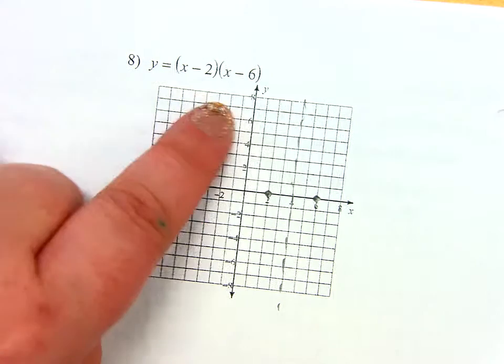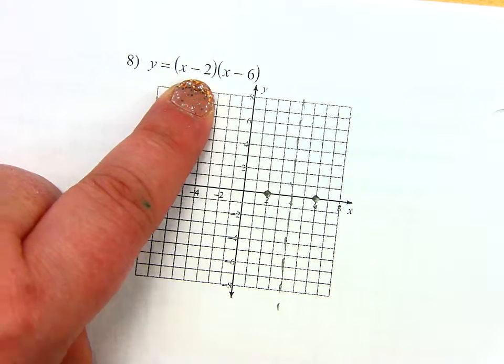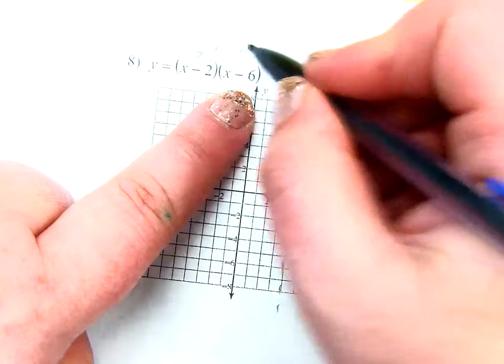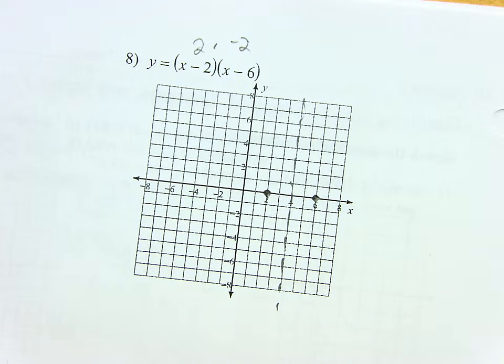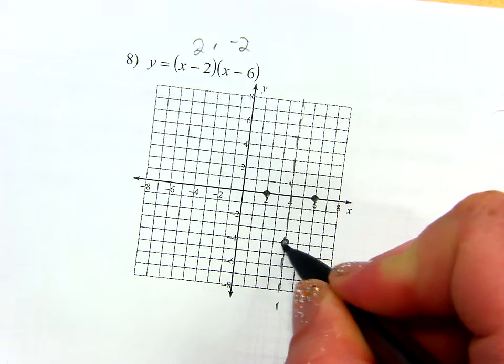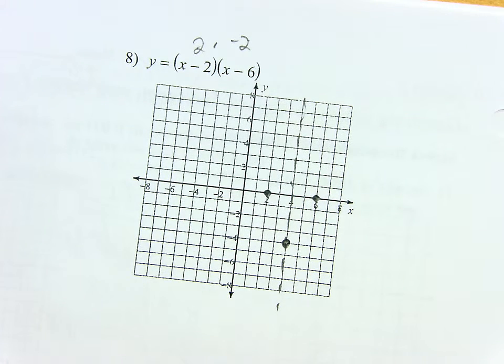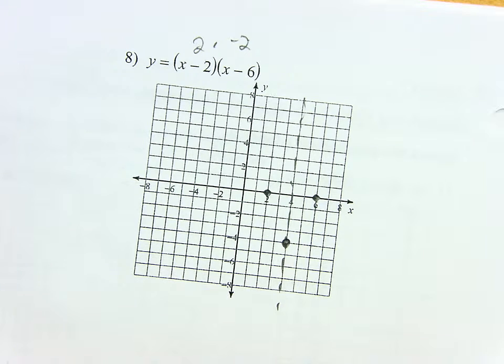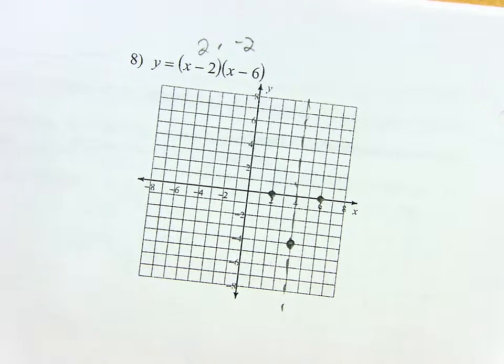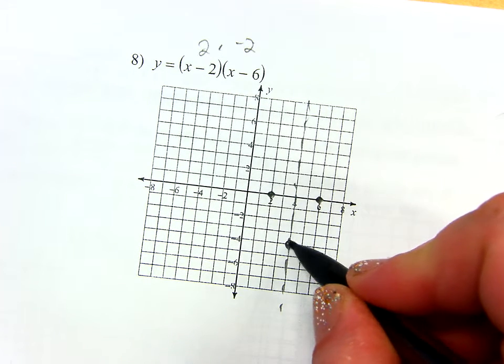So to figure out where it is, I just have to plug four into my original equation. So four minus two is two. Four minus six is negative two. Two times negative two is negative four. So does everybody agree that the vertex is at four, negative four? Before I continue, it looks like my parabola is going to be up like a cup. Is that what I'm expecting? What's A? Positive one. If there's no number in the front, it's just a positive one. So it should be up like a cup and it's not going to be particularly wide or narrow.